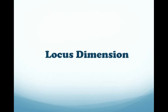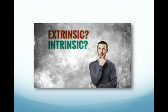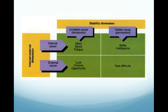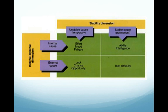The locus dimension refers to whether the cause of the event is perceived as internal to the individual or external. If a learner believes she failed an exam because she lacks ability in that area, she is choosing an internal cause because the ability is internal to the learner. In contrast, if a learner believes she failed an exam because the teacher is incompetent, she chooses an external cause because the teacher's unskillfulness is external to the student.